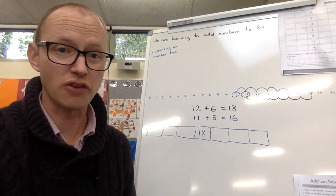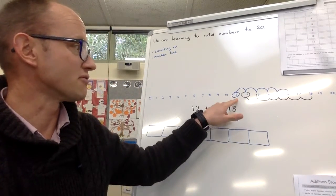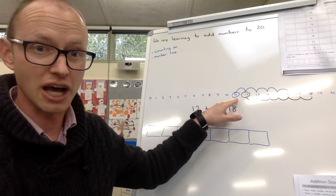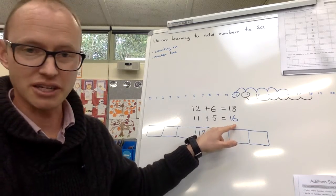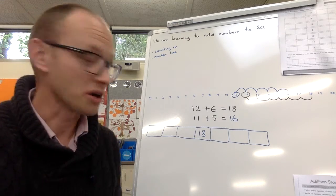Well done, give yourself a tick if you got that right as well. So 1 tick for starting, so you're counting on for the right number, 1 tick for the right number of jumps, and 1 tick for having the right answer as well. Hey, great work.